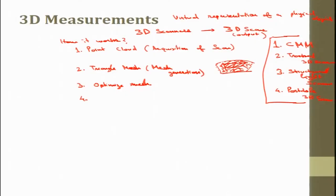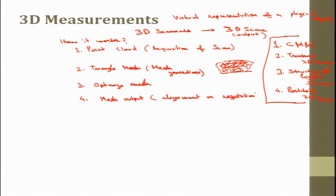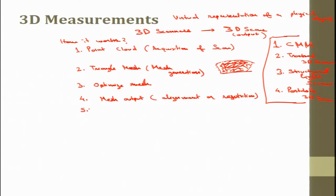The fourth step is the mesh output. Images and scans are brought into a common reference system where data is merged into a complete model. This process is called alignment or registration. When we have scanned from different views and align those surfaces to get the solid shape, this is known as complete mesh output. This mesh input then goes to the engineers, who can create a surface or solid model out of it.